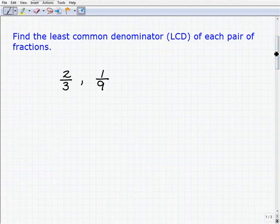So we have 2/3 and 1/9. If I want to find the LCD, I'm just focusing on the denominators. Here it's 3 and 9. So we have to find the LCM of 3 and 9. And when we do that, we're actually finding the LCD.